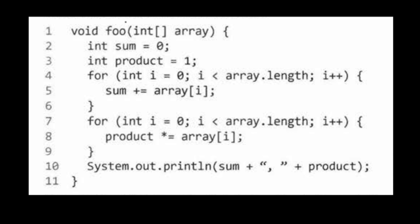We have a function called `foo` that doesn't return anything and takes in an array as its argument. The next two lines declare variables: `sum` and `product`. Then we go into a for loop that iterates through the length of the array, adding each element to `sum`. Then we break out and go into another for loop, again looping through the array and multiplying each element into `product`. Finally, we print out the sum and product.